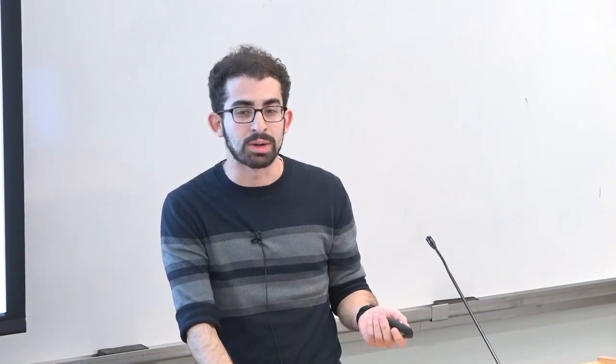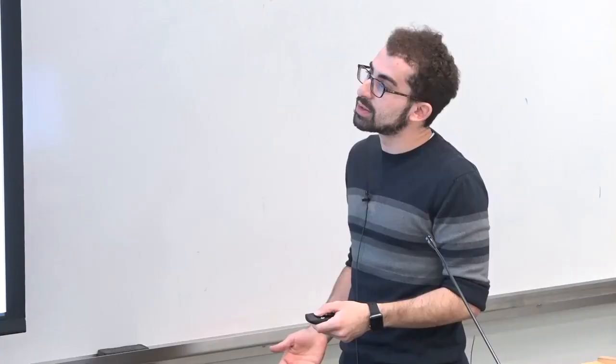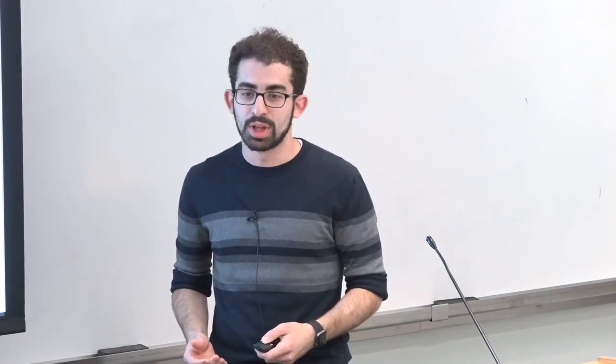Now let's say that third row is really interesting — the Galaxy S9 combination is pretty alarming because a lot of my users are using that device. I'm going to use the same interface but do a time series comparison, comparing this week to last week. All I've done is swap out the two relations — I'm comparing this week to last week using the same columns and same metrics. I get back a single tuple: the same combination now shows a risk ratio of 20 — it's 20 times more likely — and shows up 75 percent of the time. This confirms my original hypothesis from the first query.